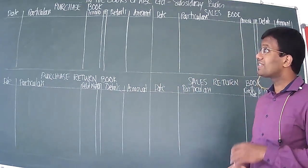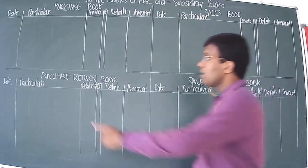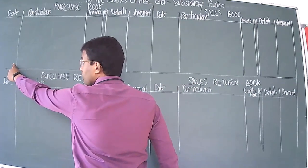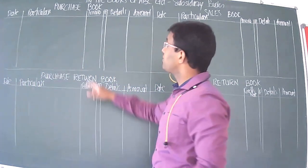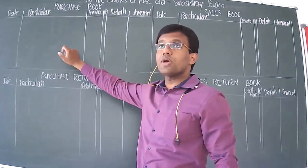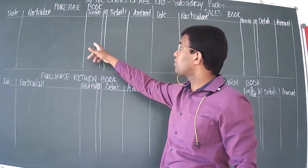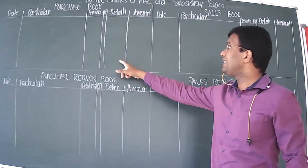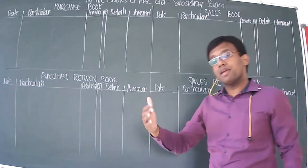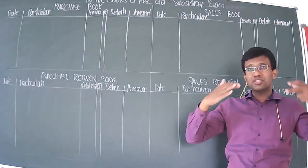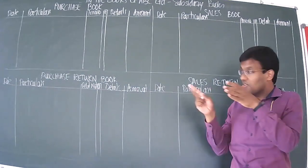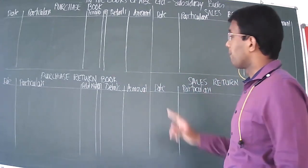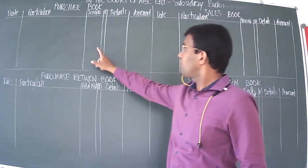Let us quickly visit the format. The first column is the date column for recording the date of the transaction. Then you have the particulars column where you record the details of your transaction. Then you have invoice, ledger folio, details, and amount columns. The details column is used when a transaction has a breakup.